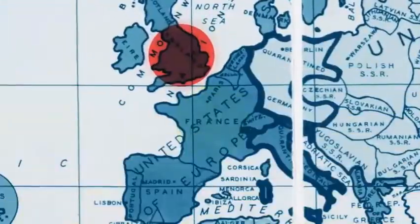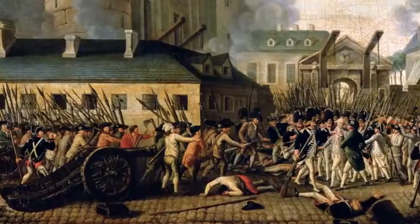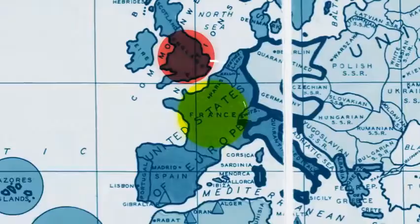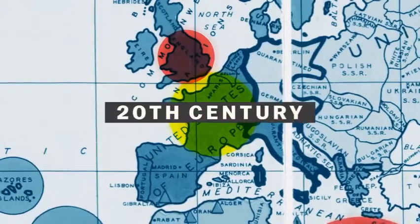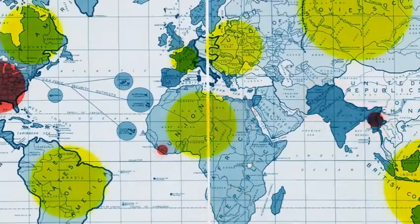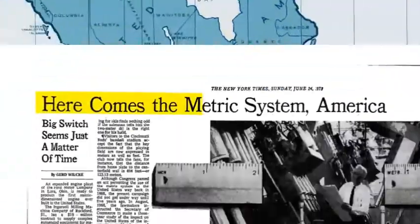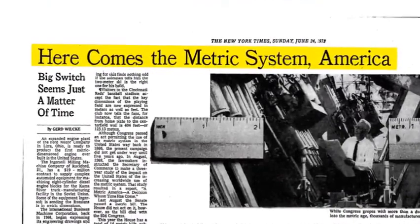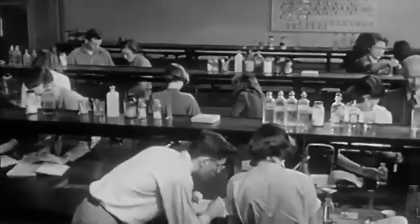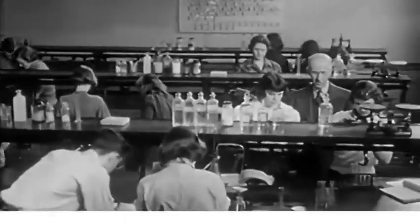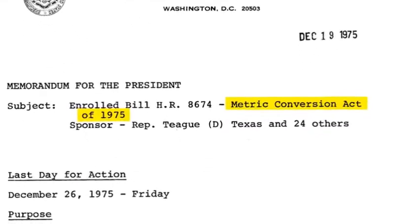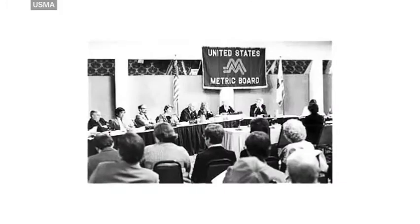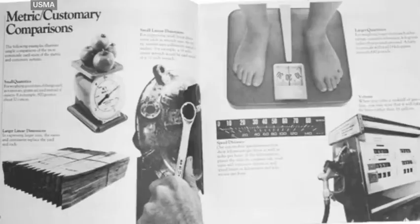Meanwhile, the metric system gained popularity during the French Revolution — put in place to unify the country at the national level. By the second half of the 20th century, Celsius became popular in many parts of the world when English-speaking countries began adopting the metric system. Even America attempted to switch; the change would have been good for trade and scientific communication. So Congress passed the 1975 Metric Conversion Act, which created the United States Metric Board to educate people about the system.